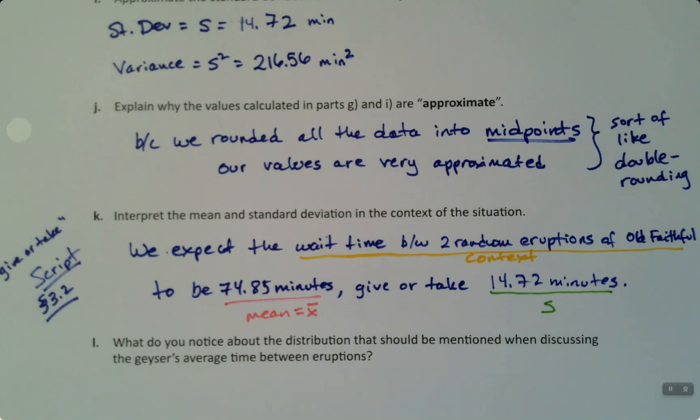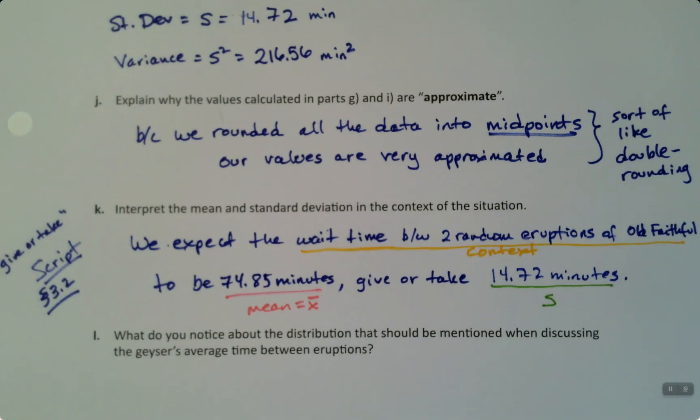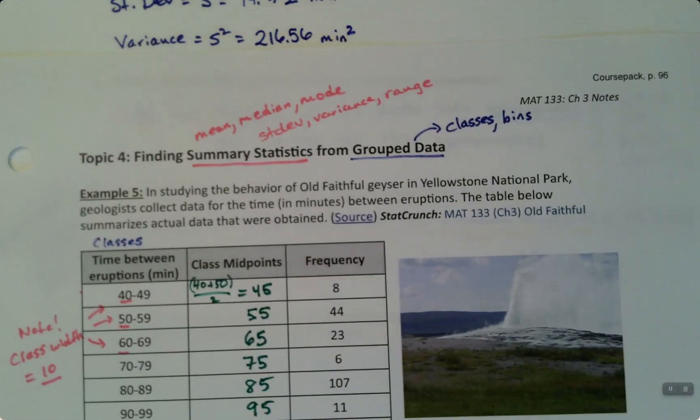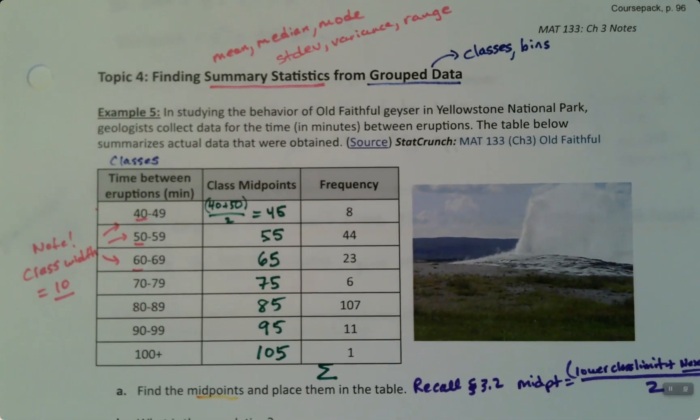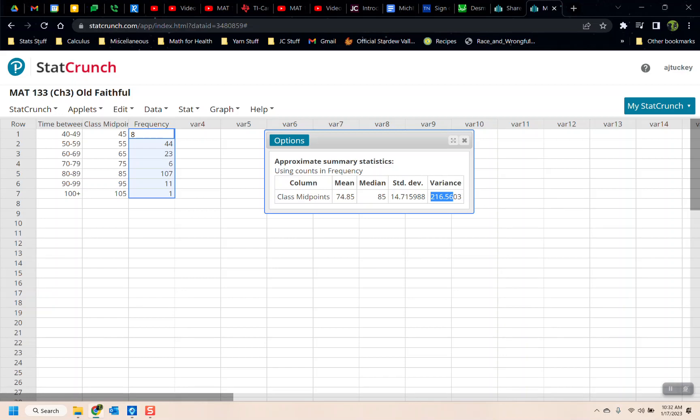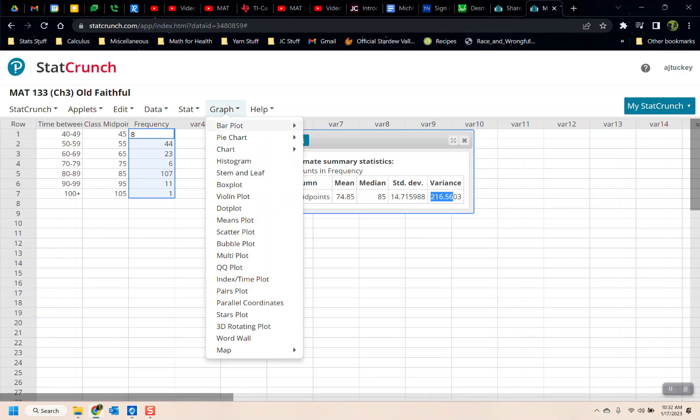All right, what else would we notice about this distribution of these times between eruptions to talk about if we were going to discuss this? And one of the other things that's clear is that this is quite skewed left. We have a big peak here at 107, and it would taper off. As a matter of fact, I can show you it's skewed left in StatCrunch pretty quickly. So if I do a graph and I could do a histogram, but I can't do a histogram. Remember, I can't do a histogram because these aren't raw data.